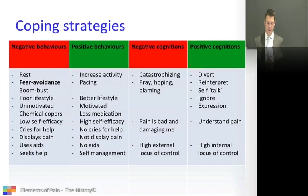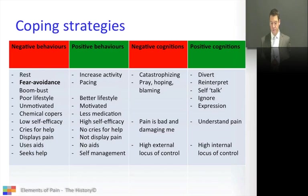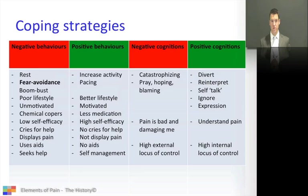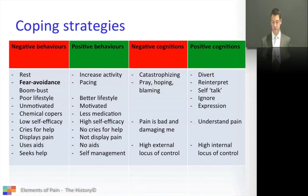Negative cognitions are: they catastrophize, they pray, they blame somebody else for their pain, and they think the pain is damaging them, which generally it isn't. We need to move their locus of control. Those with a high external locus of control generally have negative cognition — thinking that things happen because of fate and bad luck and there's nothing they can do about their situation.